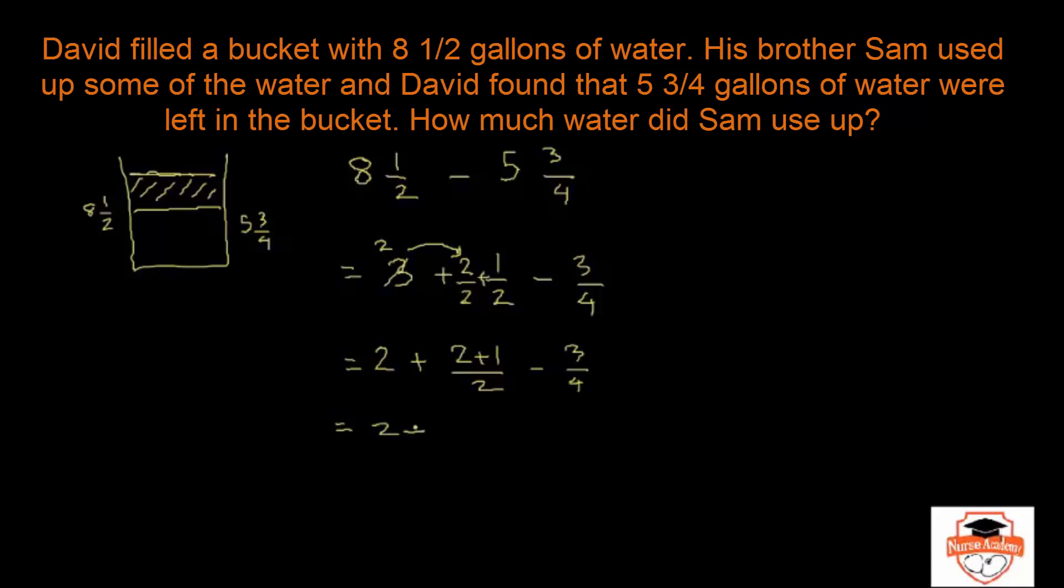So this is 2 plus 3/2 minus 3/4, and 3/2 is an improper fraction which means this is more than 1, and 3/4 is a proper fraction which means this is less than 1. So now you can go ahead and do the subtraction but before you do that, you need to change these two to the same number.